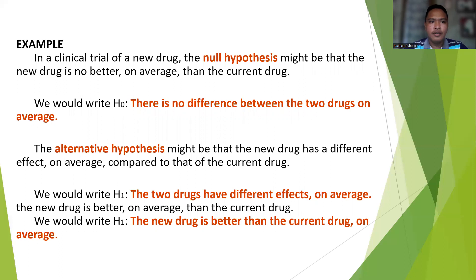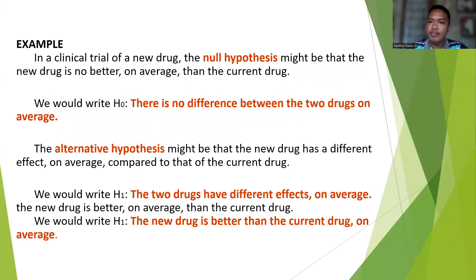Here is an example. In a clinical trial of a new drug, the null hypothesis might be that the new drug is no better on average than the current drug — there is no significant difference between the two drugs on average. The alternative hypothesis might be that the new drug has a different effect on average compared to the current drug, or that the new drug is better on average than the current drug.